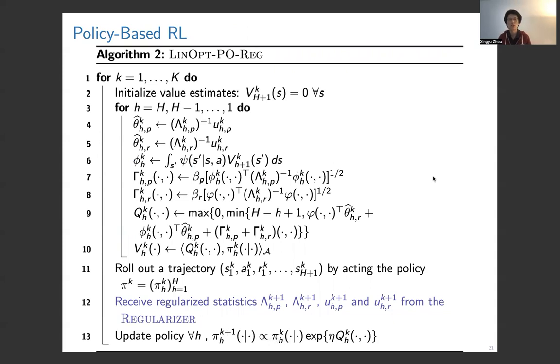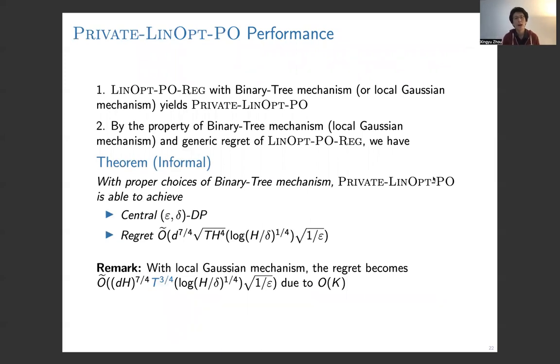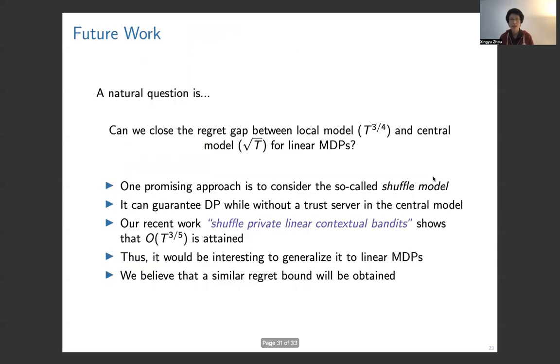Similarly, we use the same idea to privatize policy-based algorithms. We have LINOPT-PO. The only change is the same, and we use the regularizer to regularize the statistics. In contrast to value iteration, here we do mirror descent, which is a typical policy optimization algorithm. The mirror descent is on line 13. If we choose the regularizer with the binary tree mechanism, we have the central model. If we choose the regularizer as a local Gaussian mechanism, we have the local model. The algorithm we call PRIVATE-LINOPT-PO can achieve the same central privacy guarantee and the same regret bound in the central model and local model. There's still a gap between the central model and local model. One is square root of T, one is T to the power 3/4.